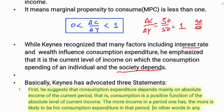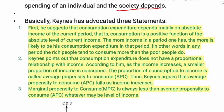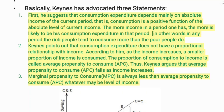Keynes gave three statements to explain the psychological law of consumption. The first statement is that consumption expenditure depends mainly on the absolute income of the current period. That is, consumption is a positive function of the absolute level of current income. The more the income in a period, the more is the likely consumption expenditure in that period.